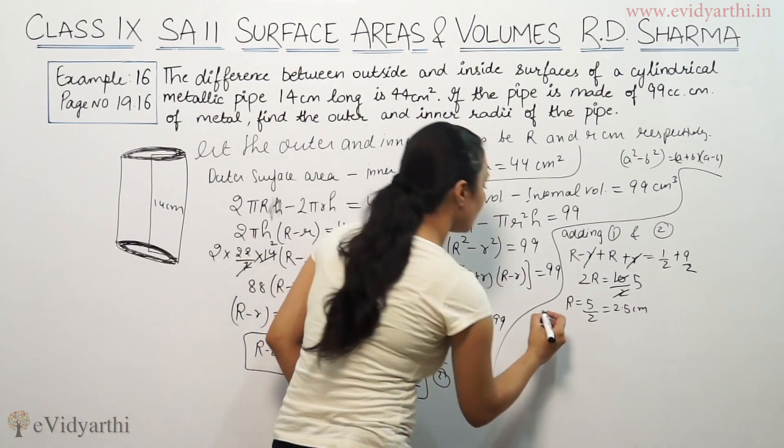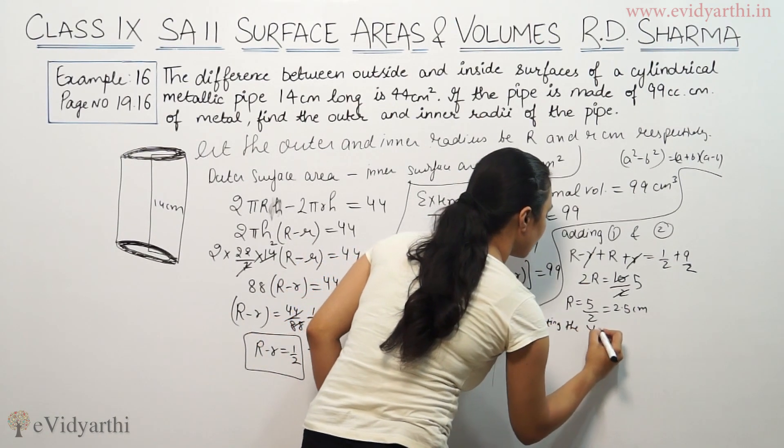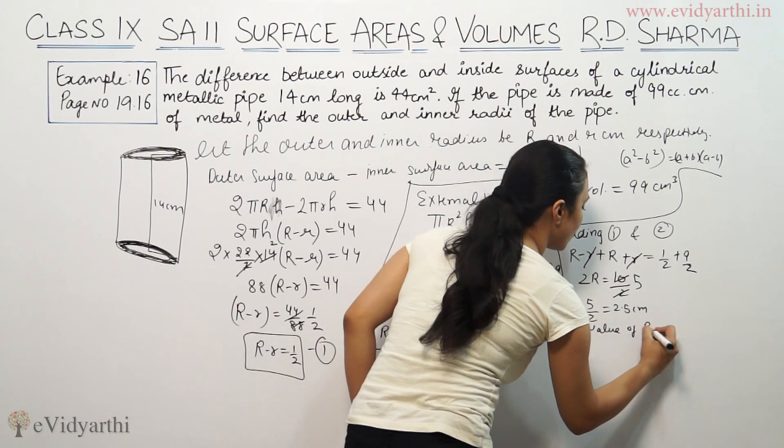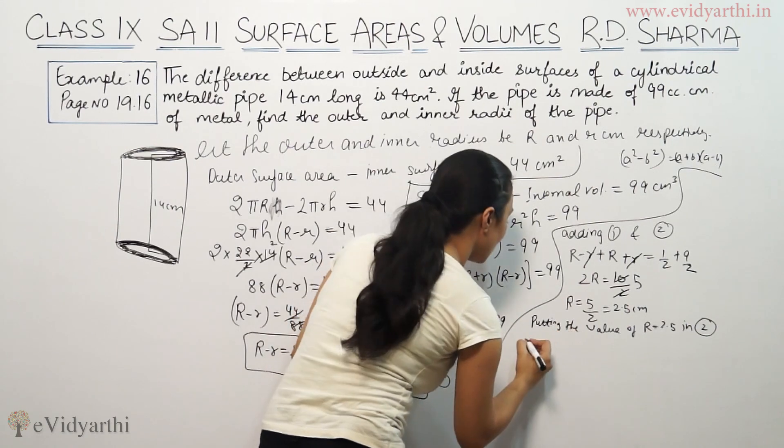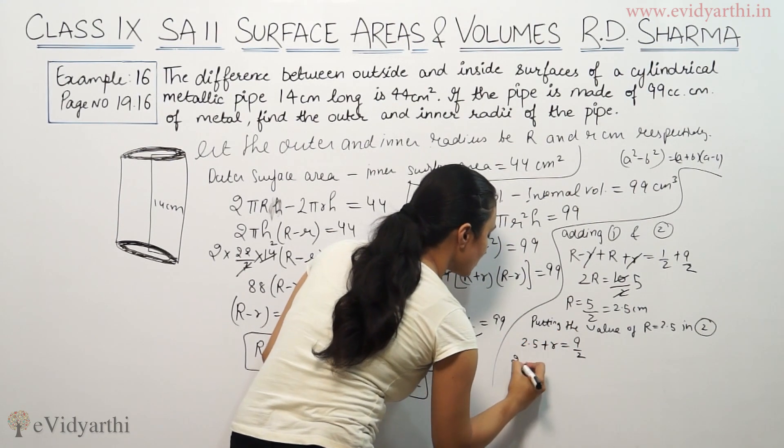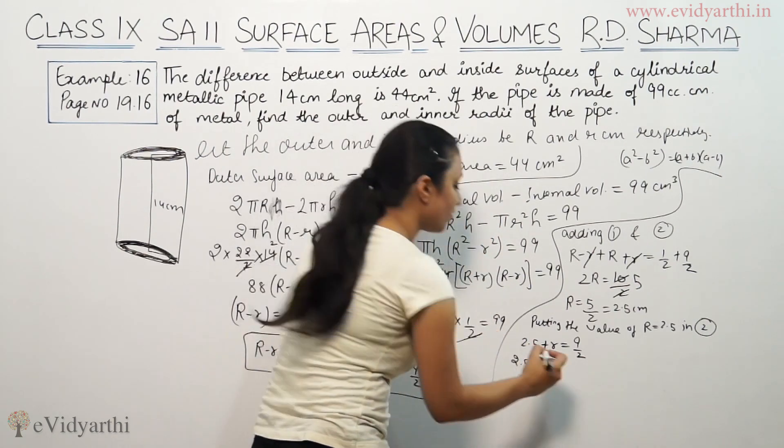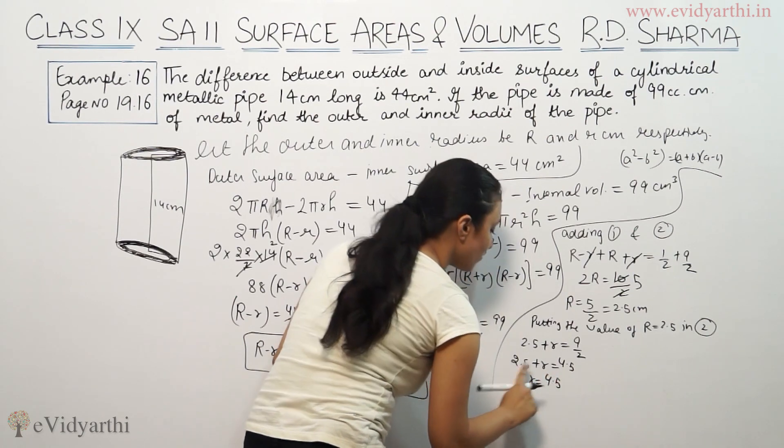Now we can use the second equation. Putting the value of R = 2.5: 2.5 + r = 9/2, which is 4.5. So r will be equal to 4.5 - 2.5.